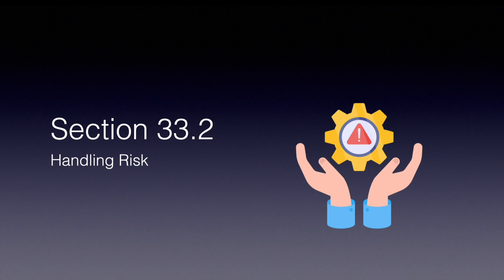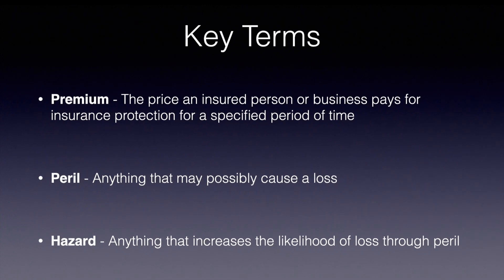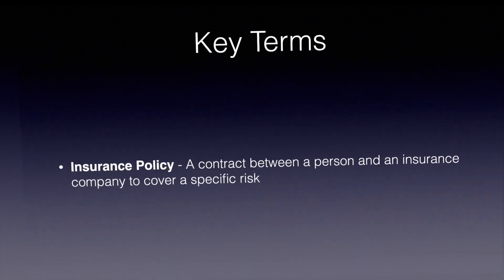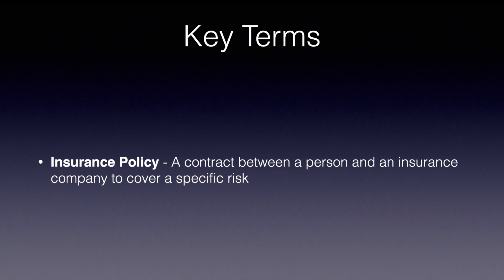Now we're going to be moving on to section two, which is about handling risk. A premium is the price an insured person or business pays for insurance protection for a specified period of time. Peril is anything that may possibly cause a loss. A hazard is anything that increases the likelihood of loss through peril. And an insurance policy is a contract between a person and an insurance company to cover a specific risk.